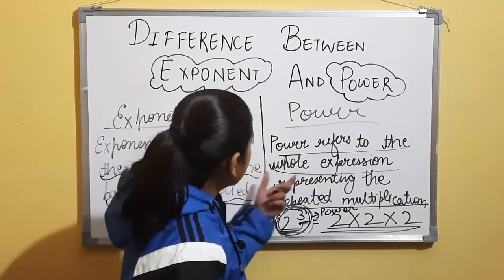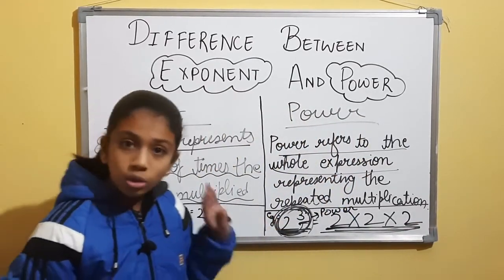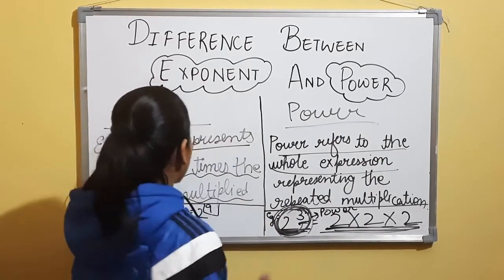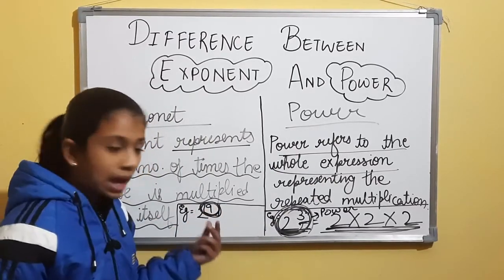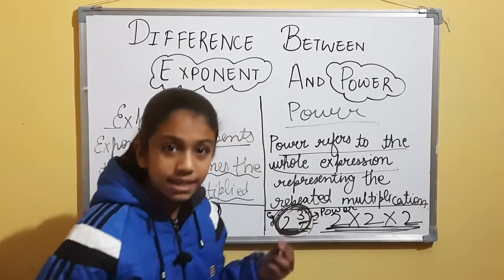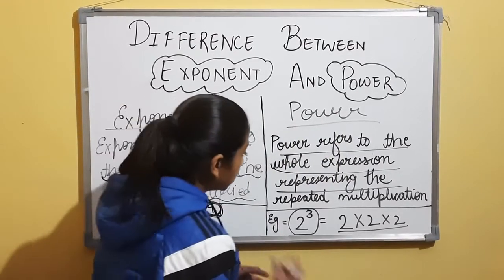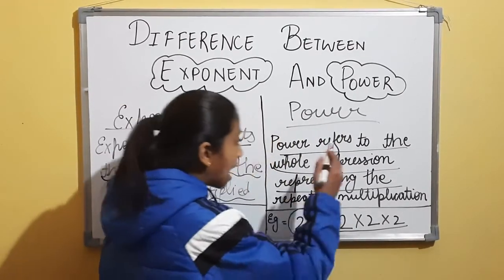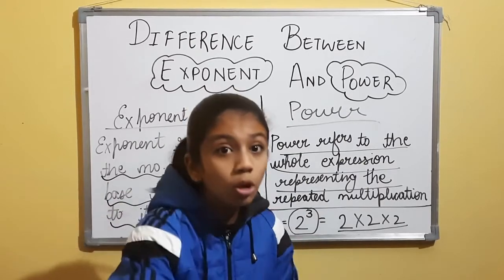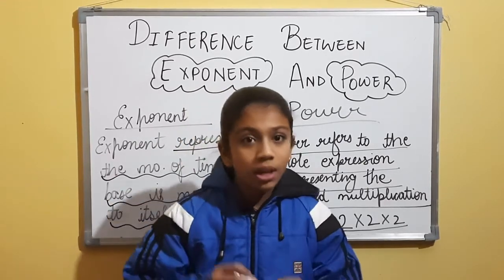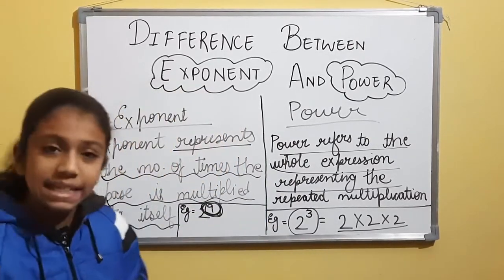So the whole expression — 2 raised to the power 3 — is the power. This whole expression is representing the repeated multiplication 2 × 2 × 2. The whole expression includes both the base and the exponent. So the exponent is just the 3, while the power is the entire expression.